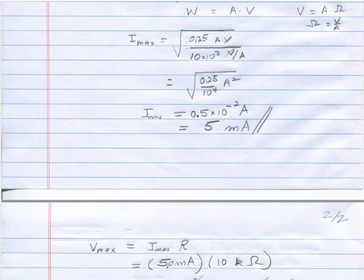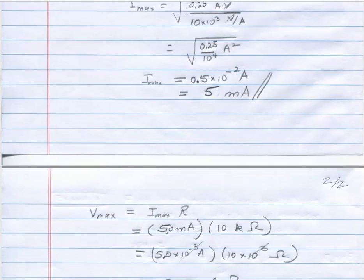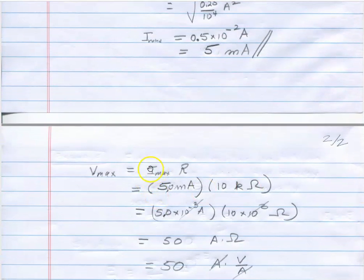It asks for the voltage so again I can use V equals IR but now if I know the maximum current then I can calculate the maximum voltage or potential difference I should apply across that resistor. And we just calculated I max was 5 milliamps.